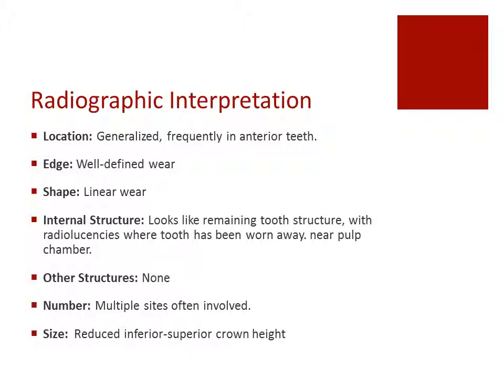Some of the radiographic interpretations and key findings include the loss of the VDO of the crown and reduction in the size of the pulp chamber. The pulp chamber is reduced due to the body depositing tertiary dentin in response to the trauma caused by attrition. In more severe cases, the occlusal plane loses its natural curvature. The location on the radiograph is generalized and frequently affects the anterior teeth. The edge is well defined, the shape is linear, and the internal structure shows radiolucencies where the tooth has been worn away, with radiopacities near the pulp chamber where tertiary dentin has been laid down. The size is a reduced inferior-superior crown height.